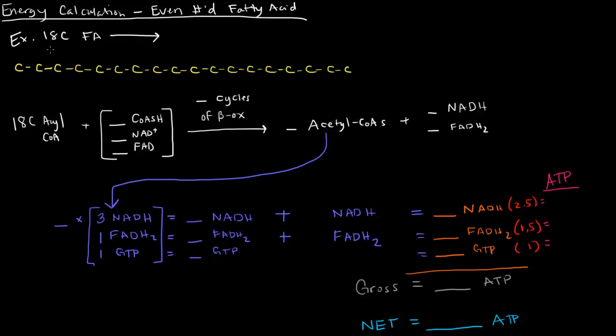For example, we have an 18-carbon fatty acid. Before we can begin to break it down via beta-oxidation, we need to turn that 18-carbon fatty acid into an 18-carbon acyl-CoA. Once we have that activated fatty acid, the acyl-CoA, this acyl-CoA can go through beta-oxidation.